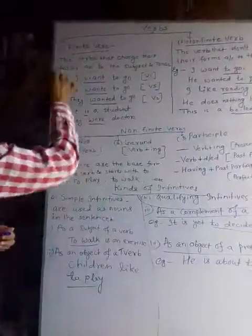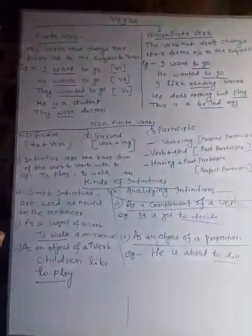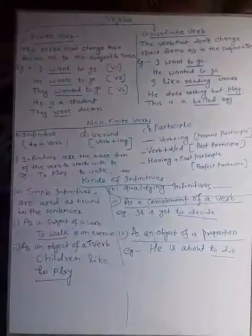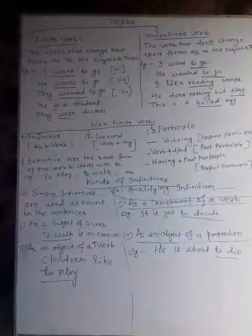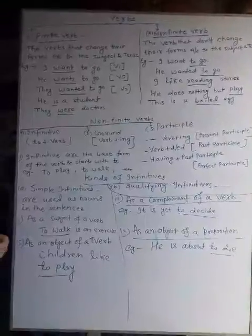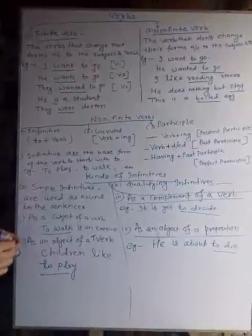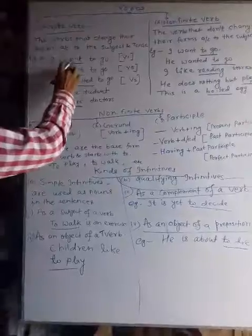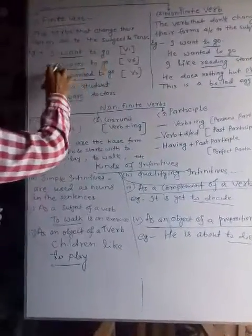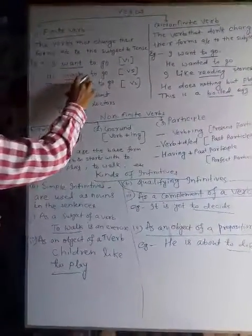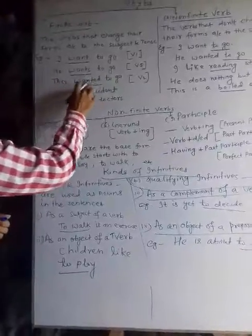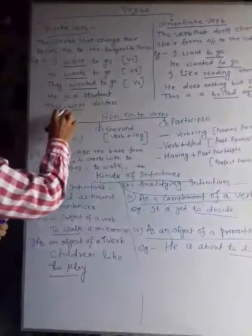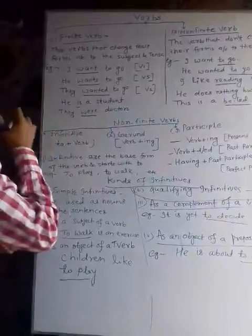Let's see what is a finite verb. The verbs that change their forms according to the subject and tense in the sentence. For example: I want to go. He wants to go. They wanted to go. He is a student. They were doctors.